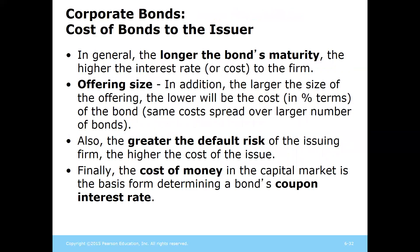One of the things we talked about was risk. With a longer time period there tends to be more risk, because more things can happen in 10 years than in 2 years. Because of this, the longer the bond takes to mature, the higher the interest rate will be — reflecting part of that risk premium.